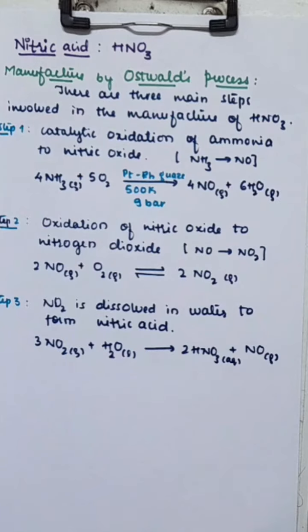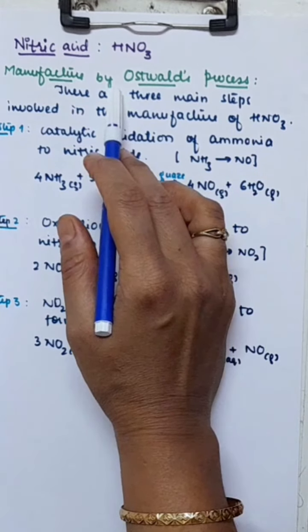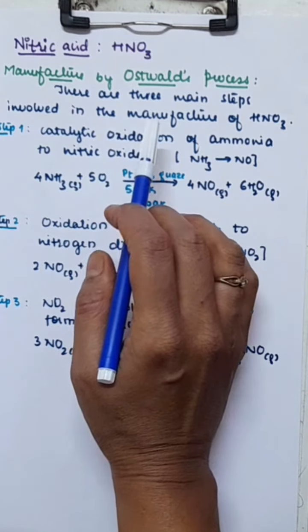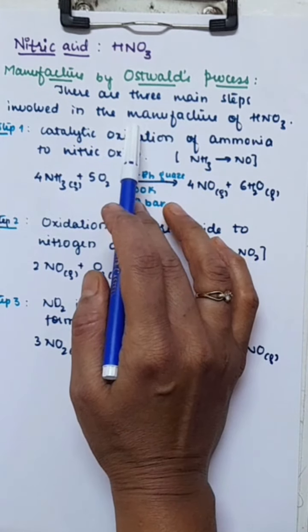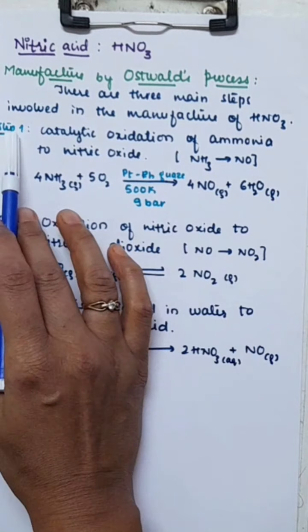Hello everyone. Today in this session we shall discuss nitric acid HNO3 — its manufacture, chemical properties, and uses. Manufacture of nitric acid is by Ostwald's process. On a large scale it is prepared mainly by Ostwald's process. There are three main steps involved in the manufacture of nitric acid.